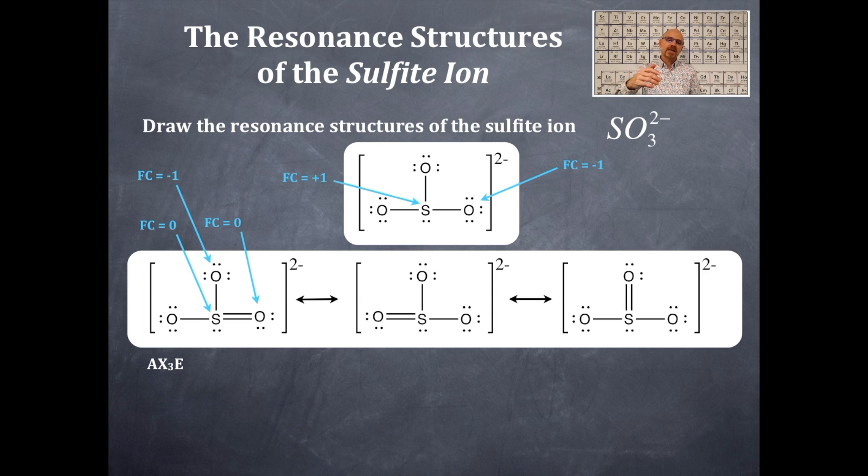Now, if you start dumping in more double bonds for those oxygens that are singly bonded, then you're going to start having positive formal charges on the sulfur. And sulfur is electronegative and that won't be good. Having negative formal charges on that oxygen is actually an okay thing because it is the most electronegative element.